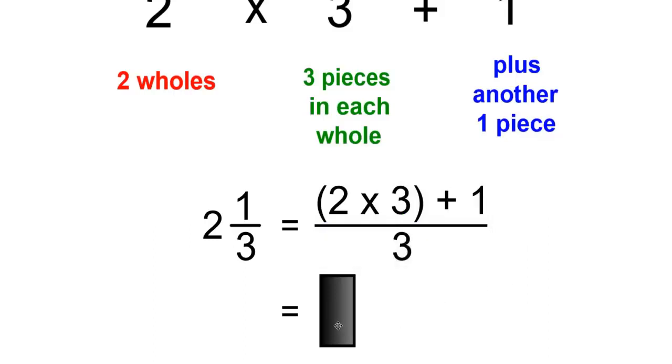2 times 3 is 6, and 6 plus 1 is 7, and that's over 3.